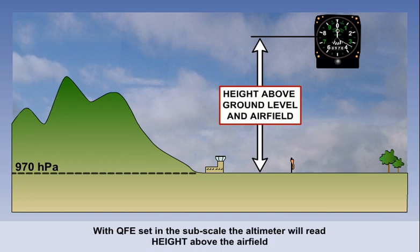If we were to get the actual pressure of the airfield and correct it to the airfield reference point or threshold, then we have a pressure value known as QFE. If this pressure was set within the subscale, the altimeter would read zero when on the ground at the threshold or airfield reference point.